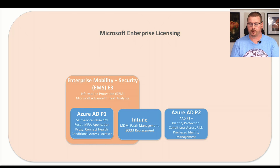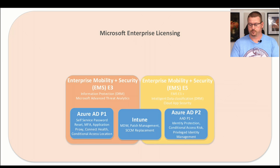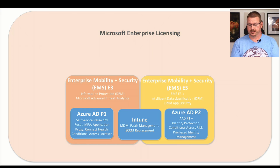The first bundle we're going to talk about is Enterprise Mobility plus Security, or EMS E3. What E3 is, it's a combination of Azure AD P1 and Intune, plus Information Protection or DRM, and Microsoft Advanced Threat Analytics. Next, the EMS E5 includes everything in E3, adding in Azure AD Premium P2, Intelligent Data Classification — which can dynamically assign tags to the data that users are saving — and Cloud App Security. So those are the Enterprise Mobility bundles that Microsoft offers.